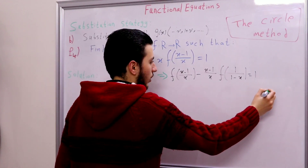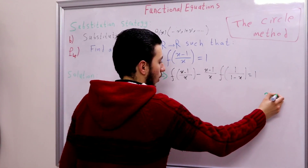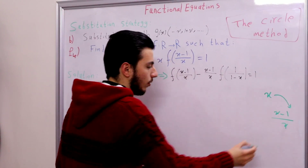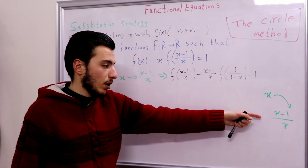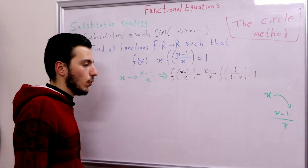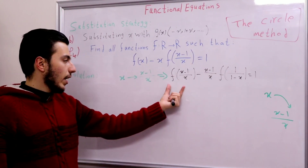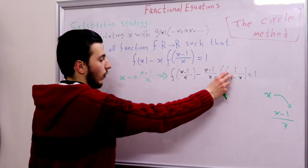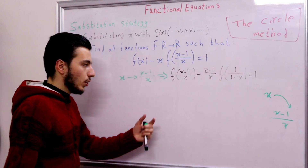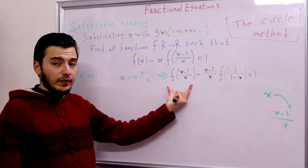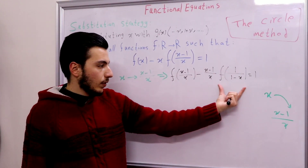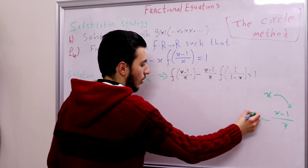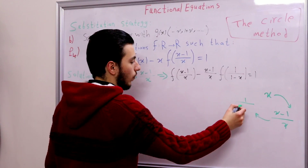The first thing we did is substitute x with x minus 1 over x, because x is linked to x minus 1 over x. Now we have f(x minus 1 over x) linked to f(1 over 1 minus x). So in order to evaluate this f we need to evaluate the next one. We now have x minus 1 over x linked to 1 over 1 minus x.